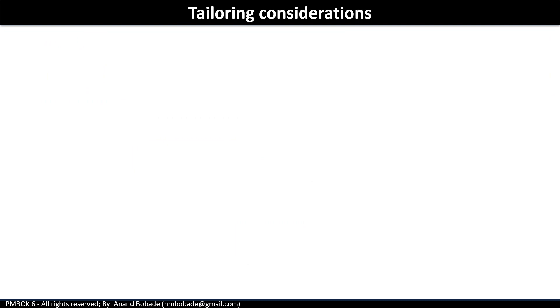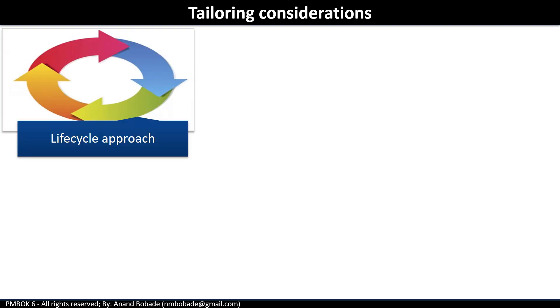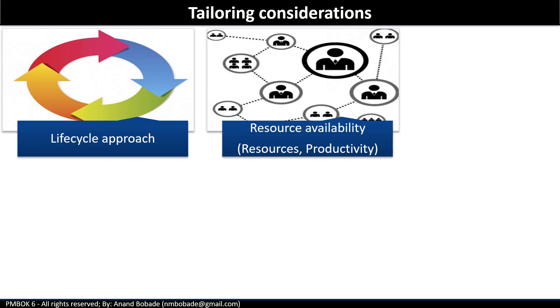Tailoring considerations: because each project is unique, the project manager may need to tailor schedule management processes. Key considerations include lifecycle approach — what is the most appropriate lifecycle approach that allows for a more detailed schedule? Next is resource availability, a major factor influencing project duration: availability of resources, their productivity, need for hiring, human resources, purchasing or renting physical resources — all should be considered in process tailoring.